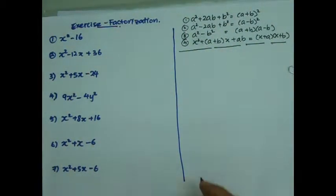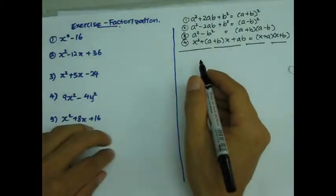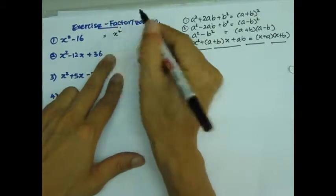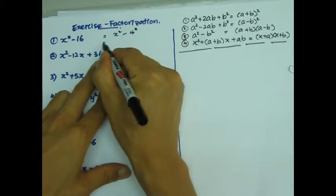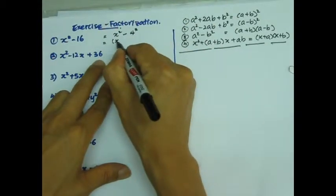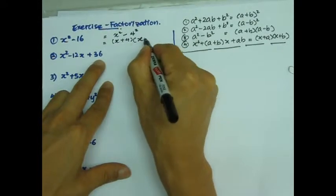Alright, let's get started. The first one is of the form number 3. So I can just simply write this as x squared minus 4 squared. So that's just going to be form number 3: x plus 4 times x minus 4.